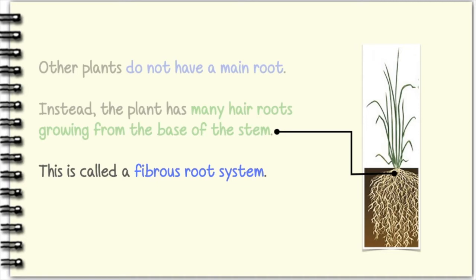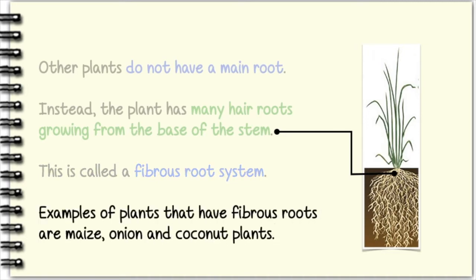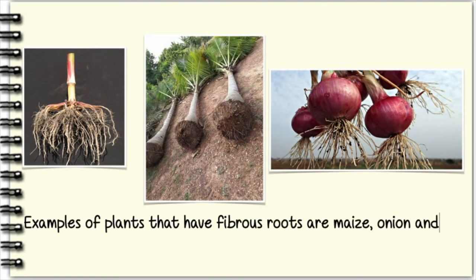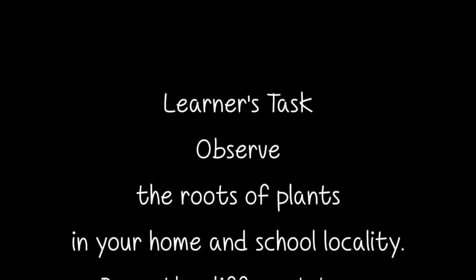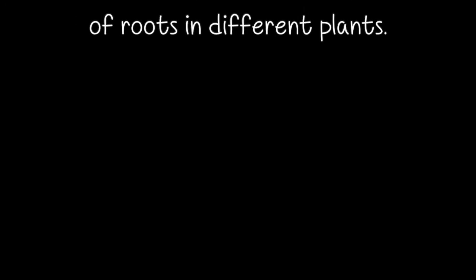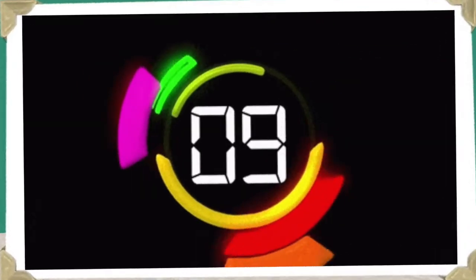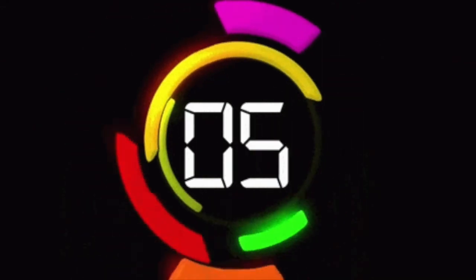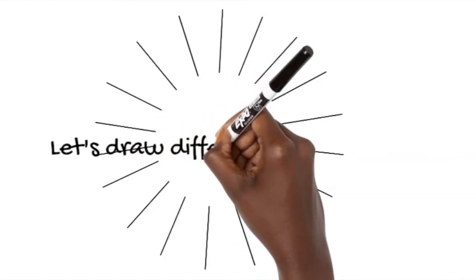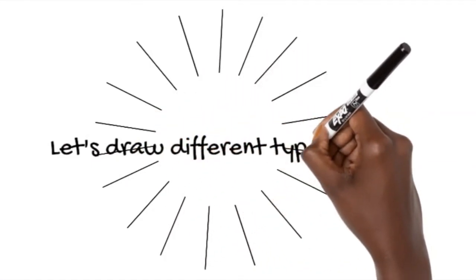Examples of plants that have fibrous roots are maize, onion, and coconut plants. These plants have fibrous roots.